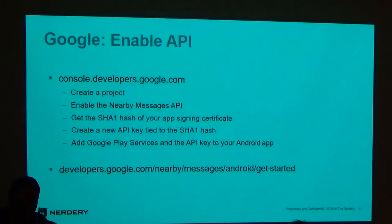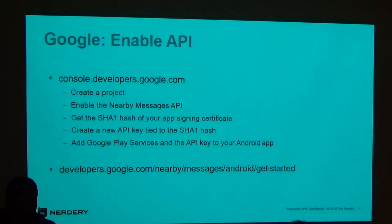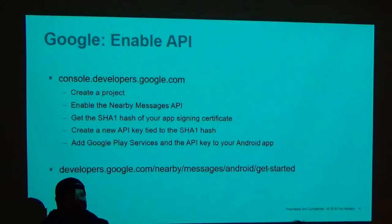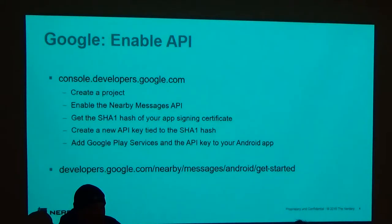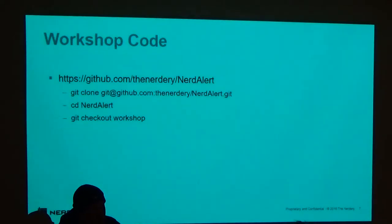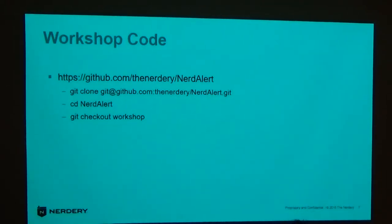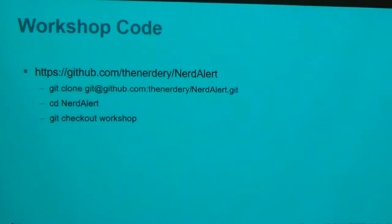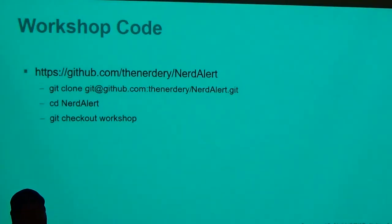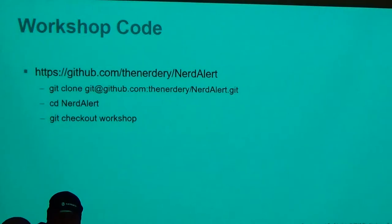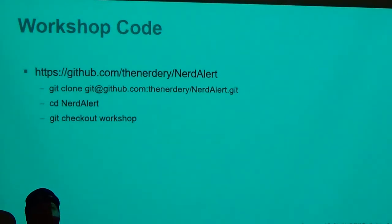The good news is if you check out the GitHub project, I've already done that — I've put the keys up there and we can play with it until we get yelled at. You should be good to go if you just want to download and compile the app. The workshop code is on GitHub at the nerdery slash nerd-alert. If you want the completed code, that's on master. We're going to be walking through the workshop branch today — everything is completely functional, just commented out, and we're going to uncomment it and talk about what it does.